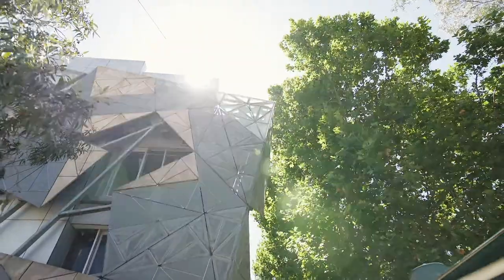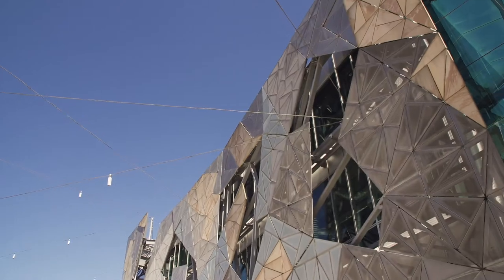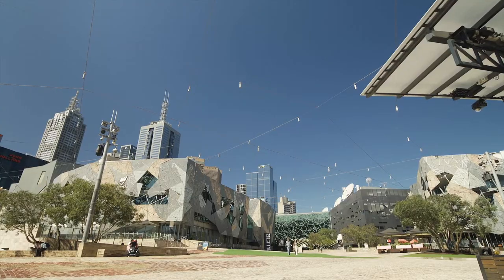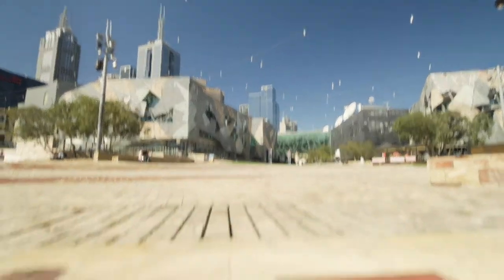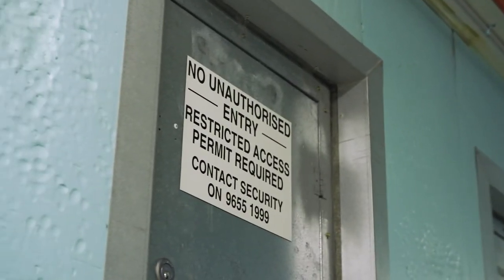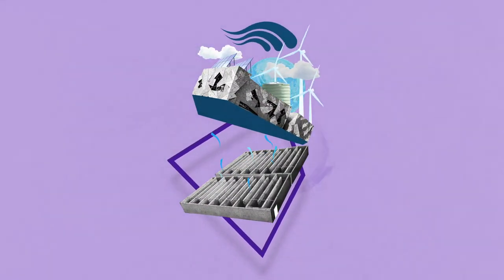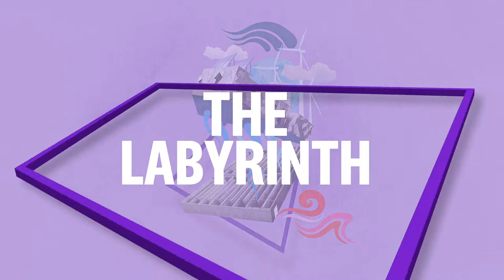Many people know Fed Square for its modern design and bold aesthetic. But few people know what lies beneath their feet. Hidden from view lies a vast underground maze that sits at the core of the square's sustainable focus. Yet this forward-thinking design draws much of its inspiration from techniques as old as the Roman Empire. This is the story of Fed Square's labyrinth.